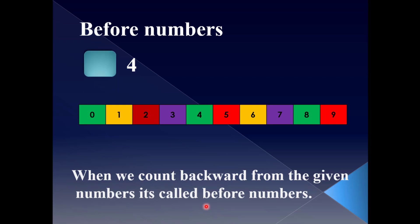Let me understand through an example. We have 4. Which number will you get going backward one number? See here — 4. Yes, you are right. You will get 3. 3 comes before 4. Before numbers are always smaller than the given numbers.